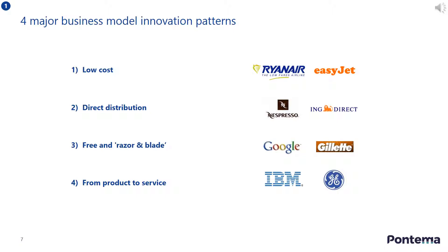Secondly, Nescafe and its Nespresso coffee line innovated in the value chain by avoiding middlemen retailers and going direct to consumers via its own Nespresso shops and online store for coffee machine refills. Thirdly, Gillette innovated in its revenue model by offering razors cheaply and at a loss in the expectation that it would recoup its investment over time via the sale of its profitable razor blades. And finally, many organizations have moved from a product to a predominantly service delivery model, like how IBM transformed itself in the 1990s from a PC hardware vendor to one focusing on IT services.